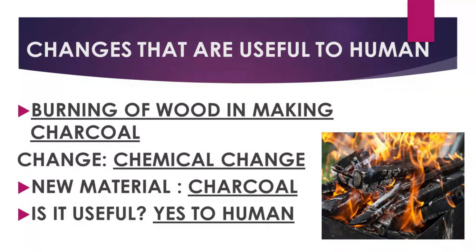The second example of changes useful to humans is burning of wood to make charcoal. What change is it? It is chemical change. Is there a new material formed? Yes — we create charcoal. Is it useful? Yes, to humans — we can use it for grilling and it can also be a business. But remember, this one is not good for our environment. Those are the examples of changes useful to humans only.